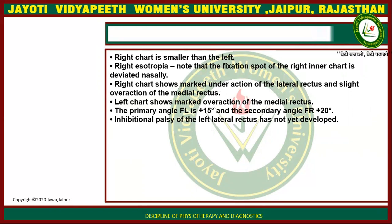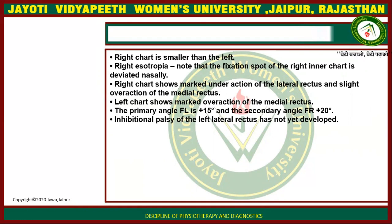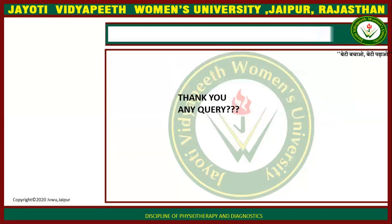In a case of right esotropia: the right chart is smaller than the left. Note the fixation spot of the right inner chart is deviated nasally. The right chart shows marked under-action of the lateral rectus and slight over-action of the medial rectus; the left chart shows marked over-action of the medial rectus. The primary angle fixing the left eye is plus 15 degrees and the secondary angle fixing the right eye is plus 20 degrees, indicating palsy of the left lateral rectus has not yet fully developed.